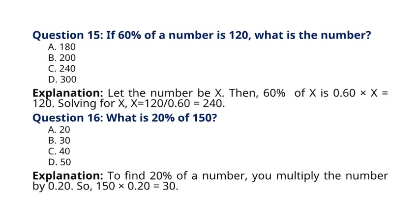Question 15. If 60% of a number is 120, what is the number? A. 180, B. 200, C. 240, D. 300. Explanation: Let the number be X. Then, 60% of X is 0.60 multiplied by X, which is equal to 120. Solving for X, X is equal to 120 divided by 0.60, which is equal to 240. So the correct answer to question 15 is option C. 240.